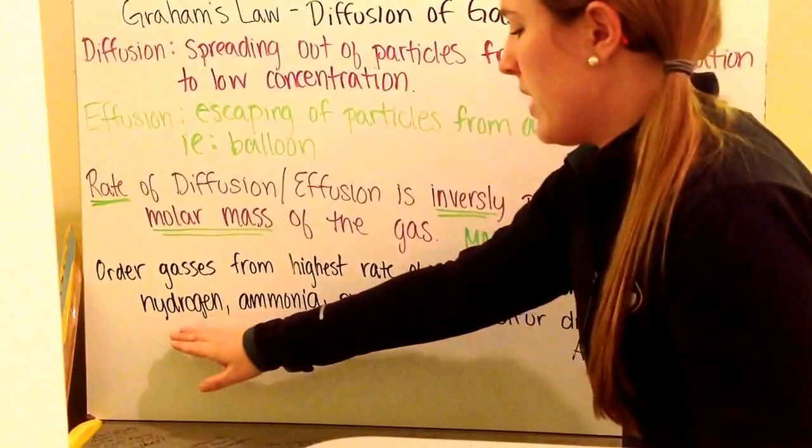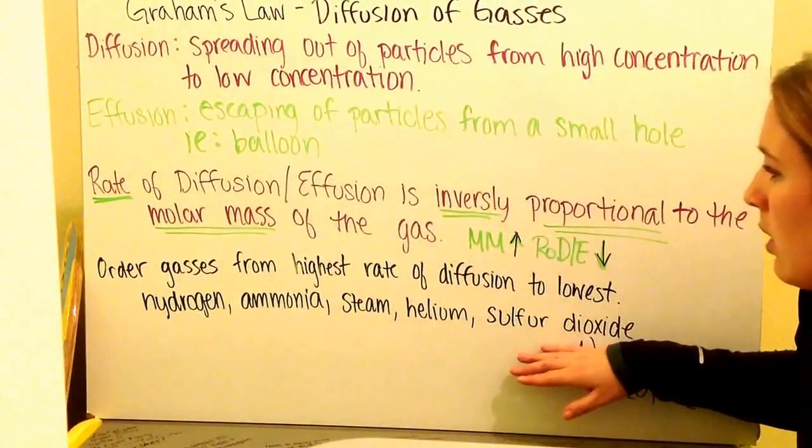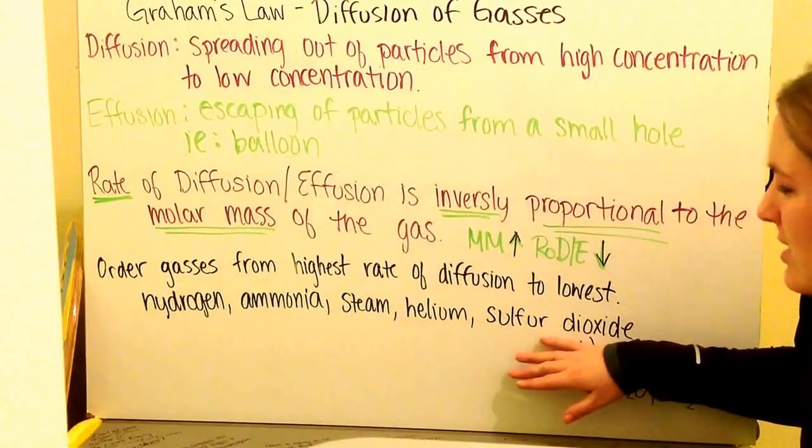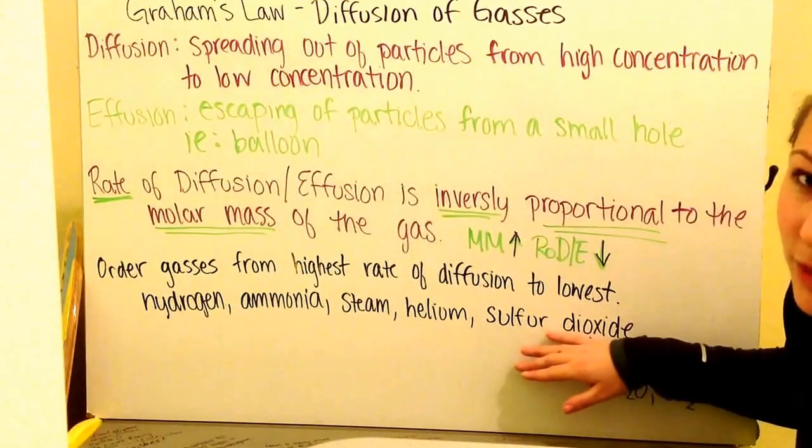The lowest rate of diffusion is going to have the highest molar mass because they're inversely proportional. As one goes up, the other will go down. So if you have the example of hydrogen, ammonia, steam, helium, and sulfur dioxide, what is the order of highest rate to lowest rate? Remember, you need to look up their molar masses.